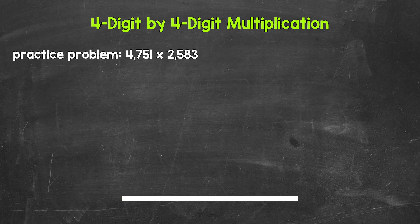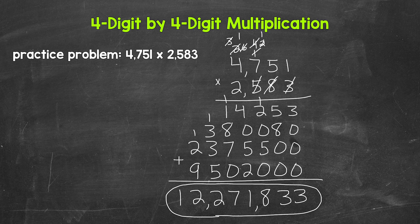Okay, so that was three minutes. Let's go over the answer. 4,751 times 2,583 equals 12,271,833. If you need more time to check your work, feel free to press pause. So there you have it — that's how to multiply a four-digit number by a four-digit number. I hope that helped. Thanks so much for watching. Until next time, peace.